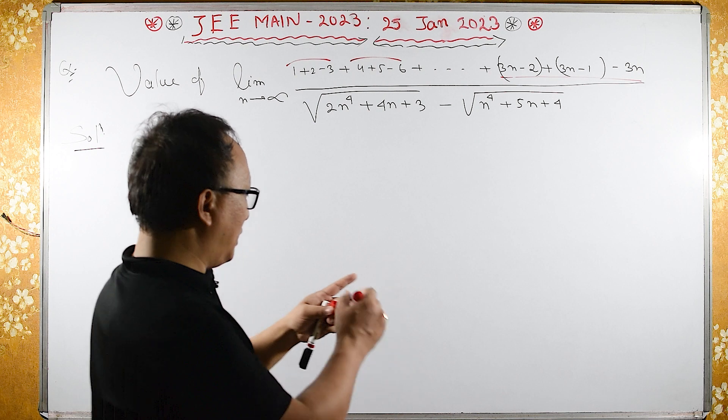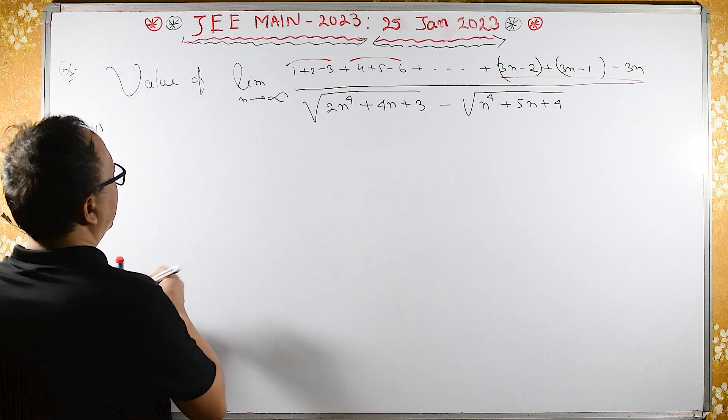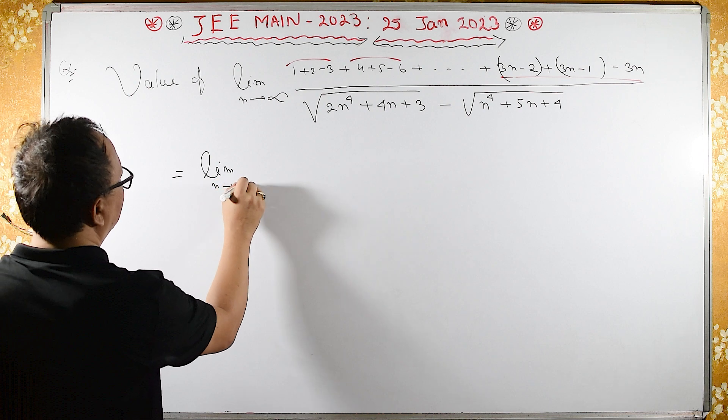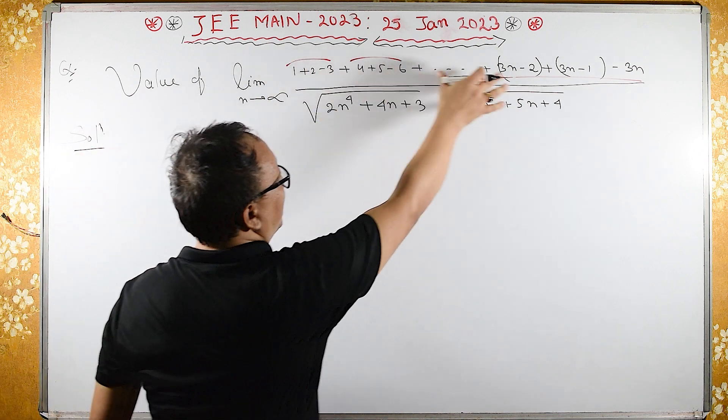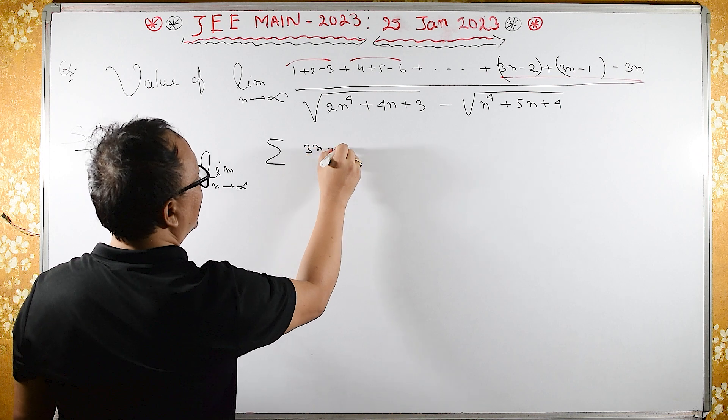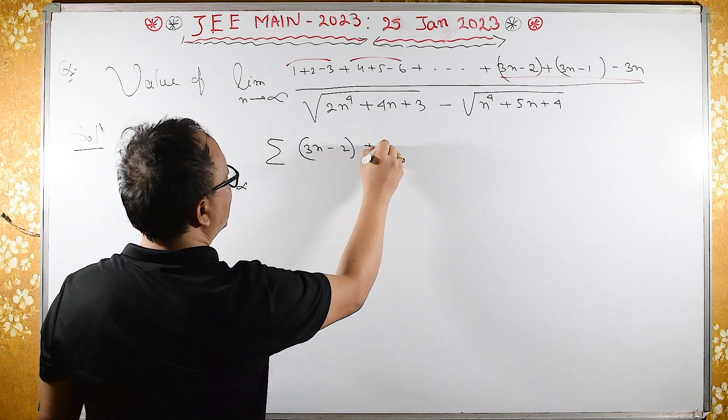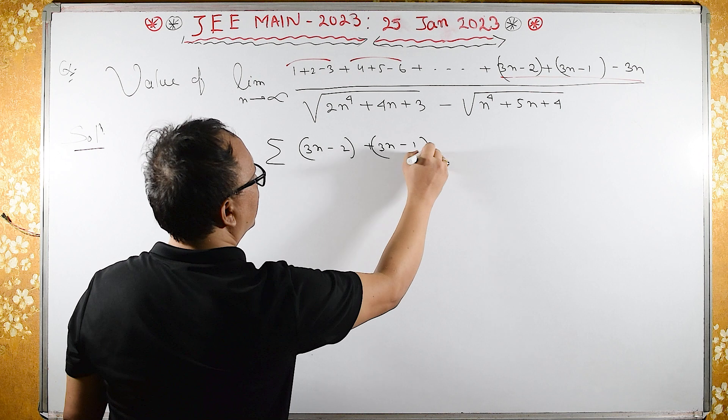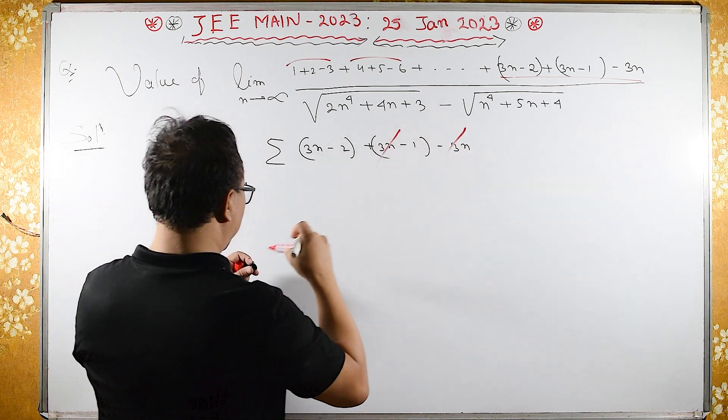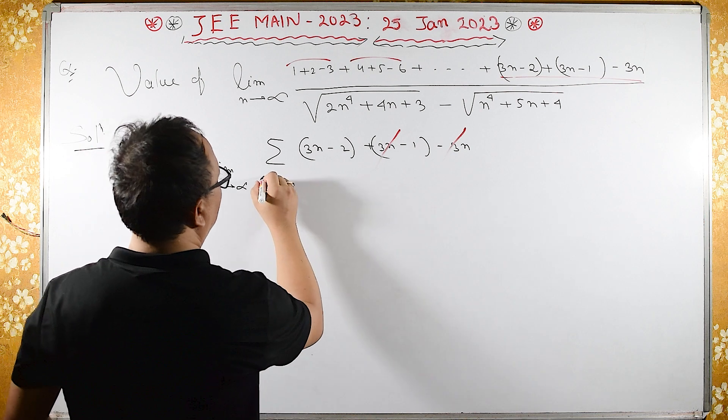So, therefore, what we can do is, this same as limit of n tends to infinity, all this is summation of this, here summation of 3n minus 2 plus 3n minus 1 minus 3n, and then 3n, 3n gets cancelled and upon.